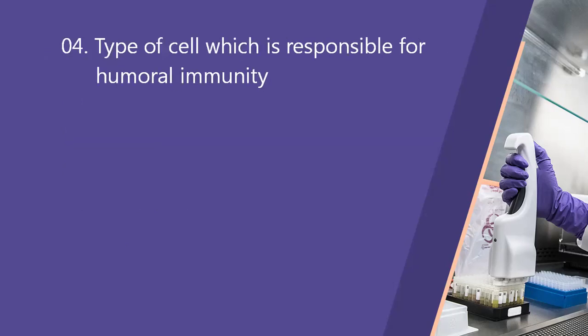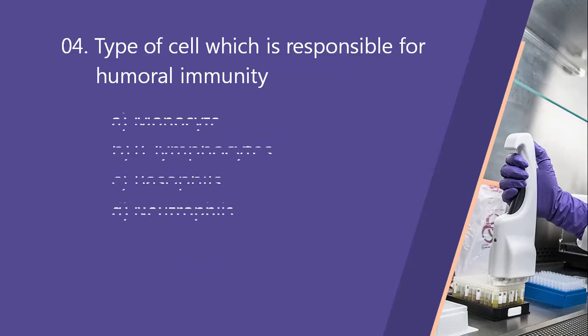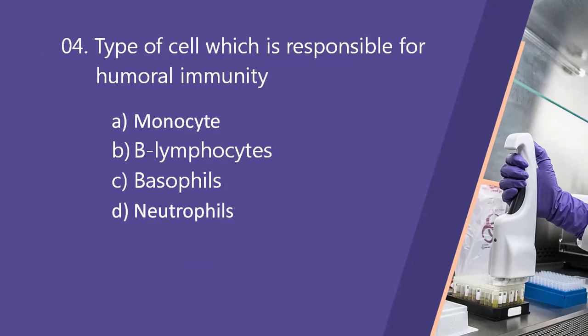Next question: type of cell responsible for humoral immunity — that is antibody-mediated immunity. Option A, monocyte. Option B, lymphocytes. Option C, basophils. Option D, neutrophils. The right answer is option B, B lymphocytes. Humoral immunity is adaptive or acquired immunity, mediated by production of antibodies, which are produced by B lymphocytes.